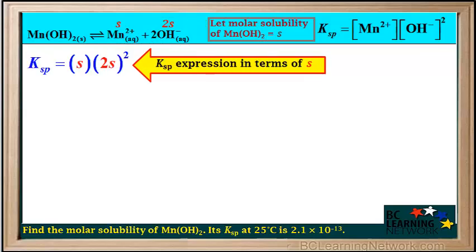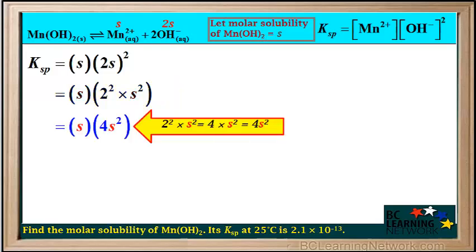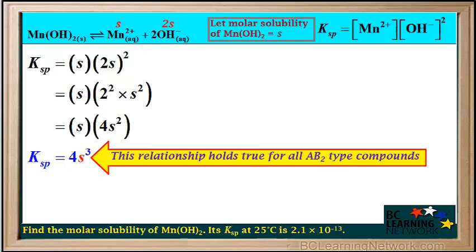So Ksp is equal to S times (2S)², all squared. We know from math that (AB)² equals A² times B², so (2S)² equals 2² times S². 2² equals 4, so 2² times S² equals 4S². S times S² equals S³, so S times 4S² equals 4S³, meaning Ksp equals 4S³. It's good to note that Ksp equals 4S³ for all AB2 type compounds.